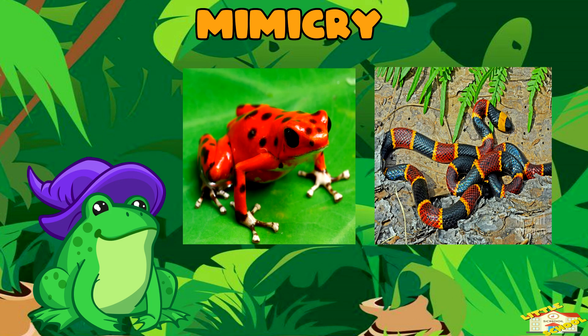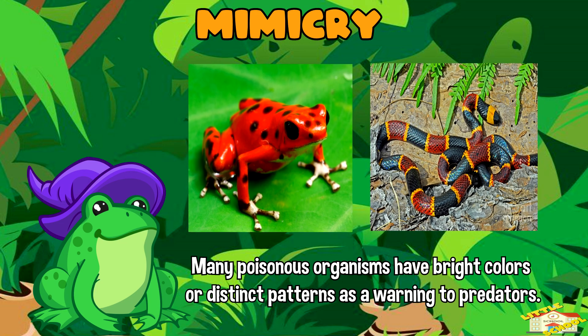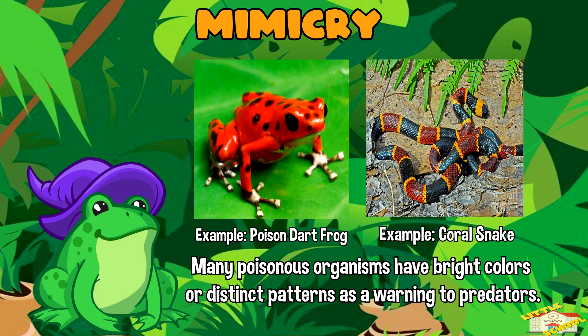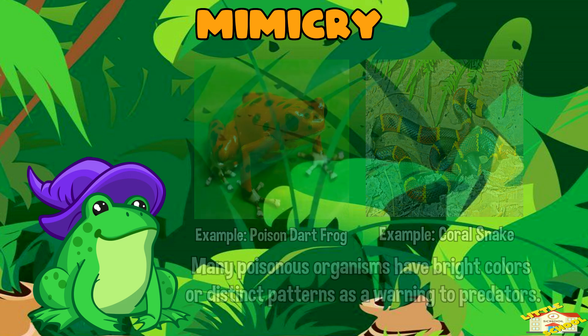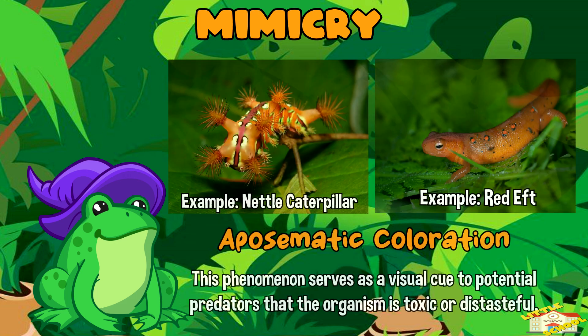Mimicry: many poisonous organisms have bright colors or distinct patterns as a warning to predators. This phenomenon, known as aposematic coloration, serves as a visual cue to potential predators that the organism is toxic or distasteful.